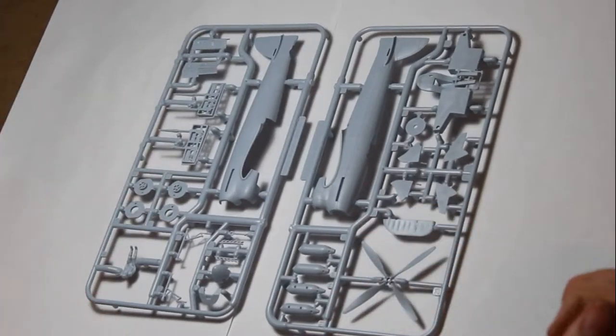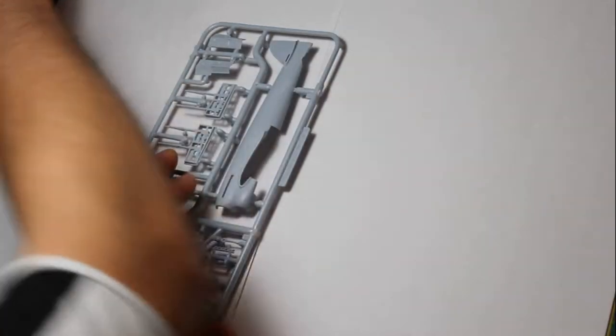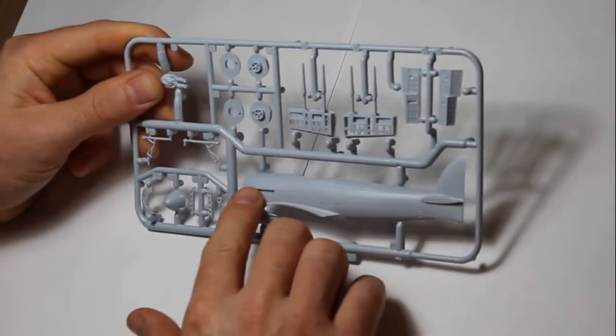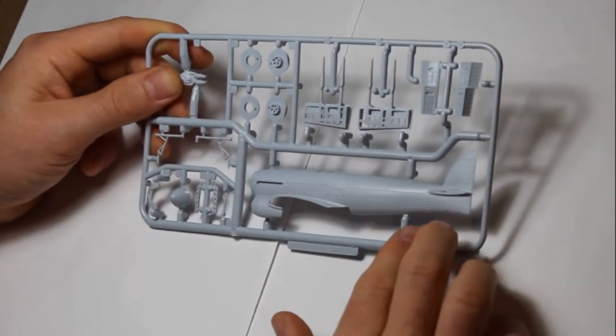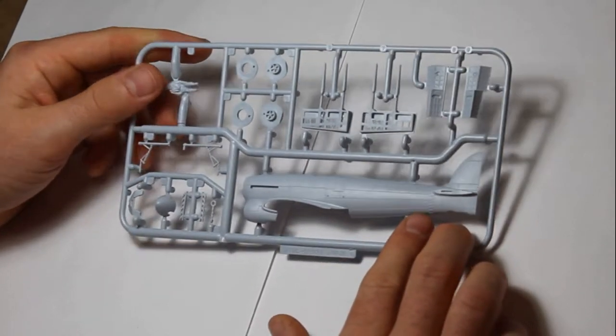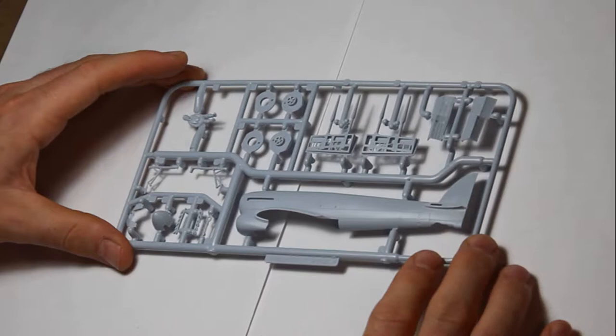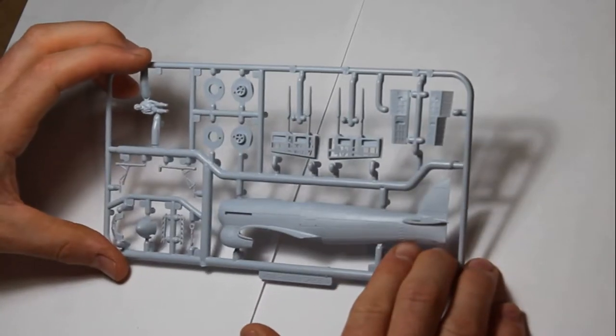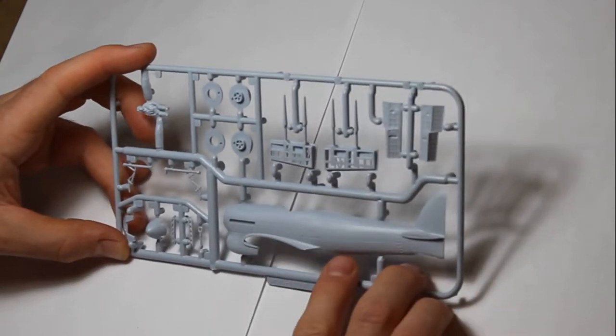And then we start with the sprues. We've got four sprues. And there's two of the fuselage halves. We've got engraved panel lines. Quite good detailing. You've even got the bracing straps that were attached to the tails, because I believe that the initial versions of these, the tails would break off. So there was strapping added for strengthening.